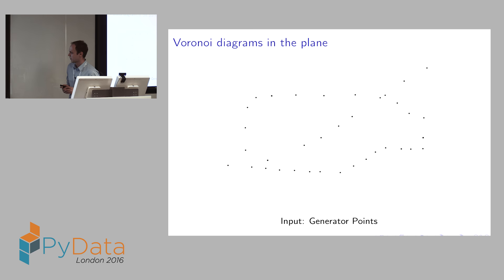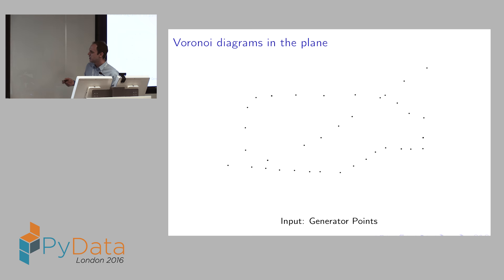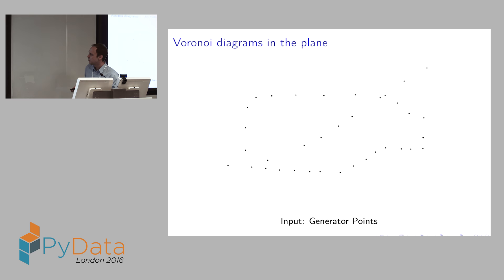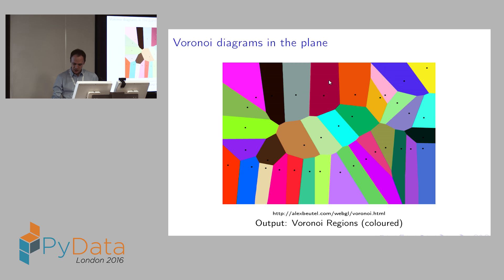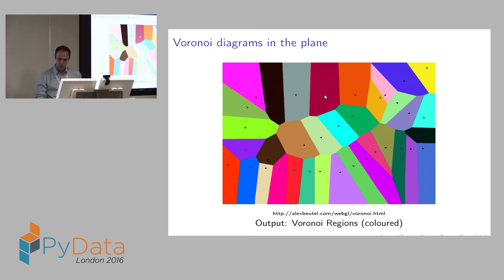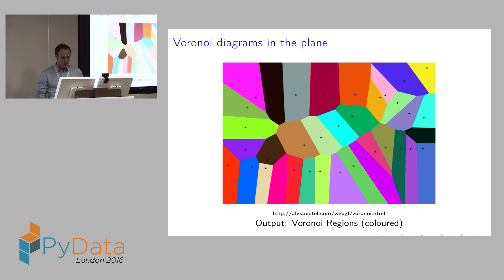Let's start with the first part: planar Voronoi diagrams. The easiest way to understand this is to think of the graphic you see here as a simplified map of London. These black dots represent tube stations in London — you can roughly see the circle line and a diagonal Piccadilly line. If you are at some point in the plane you might wonder what is the closest tube station to you, and the Voronoi diagram is exactly what gives you this information.